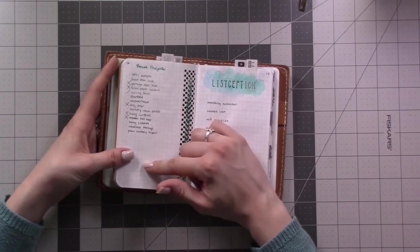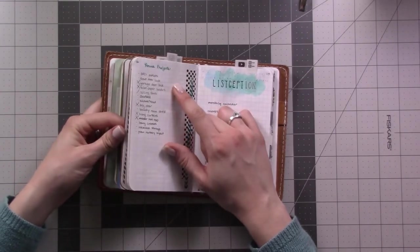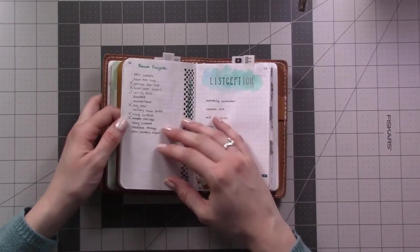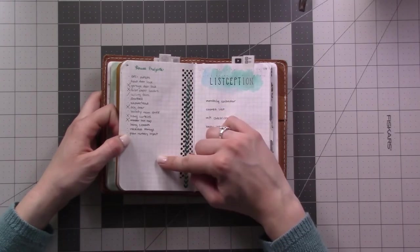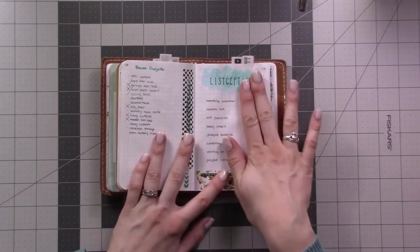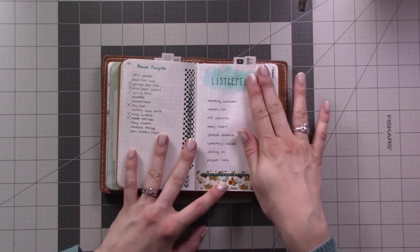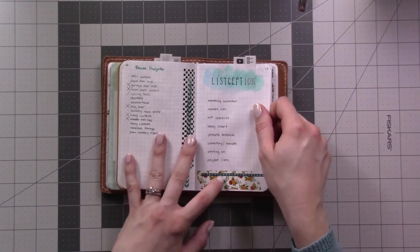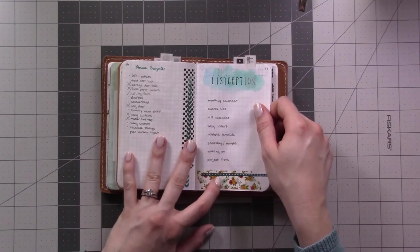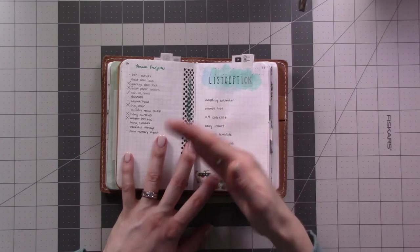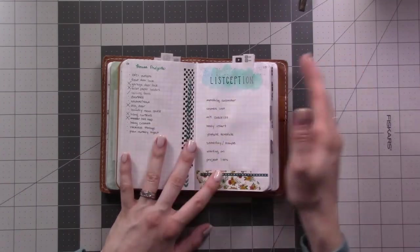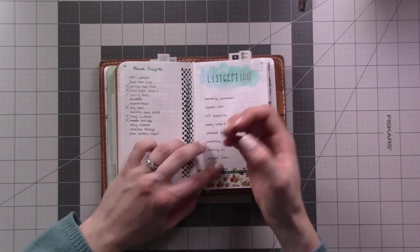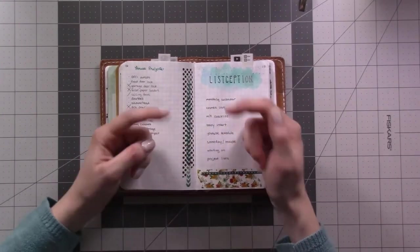This is a list of projects around the house that needed doing. This is a list of lists. Some people may think that sounds crazy, but this list was indispensable to me. Basically every week as I go through and plan my week, there's different places throughout the planner that house potential projects that may need work, and if they're not already on my radar I need a reminder to go back and look at these different places.